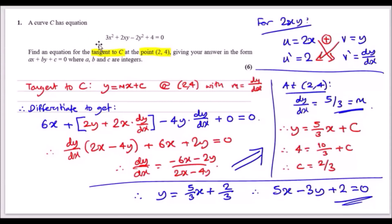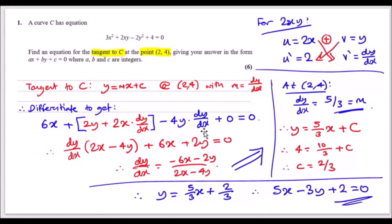Differentiating term by term: the first term, 3x², gives 6x. For 2xy we need to use the product rule. Let u = 2x and v = y, so du/dx = 2 and dv/dx = dy/dx. Applying the product rule gives 2y + 2x(dy/dx). For 2y², bring the power down to get 4y(dy/dx), and the constant gives 0.